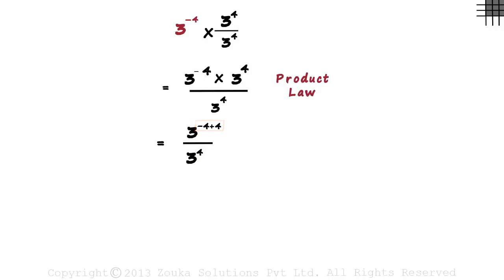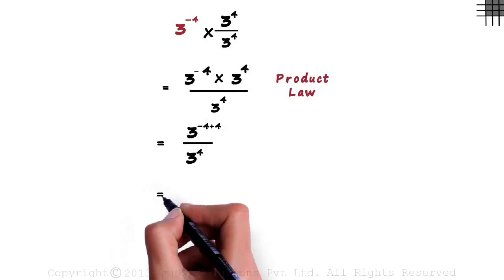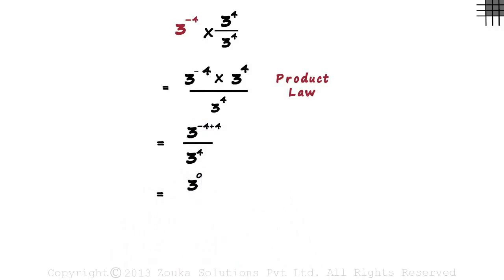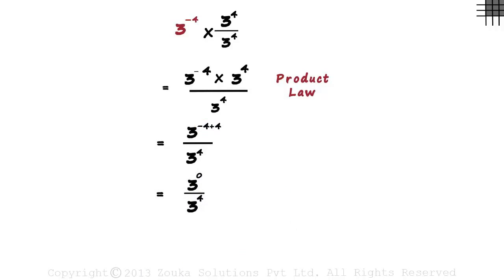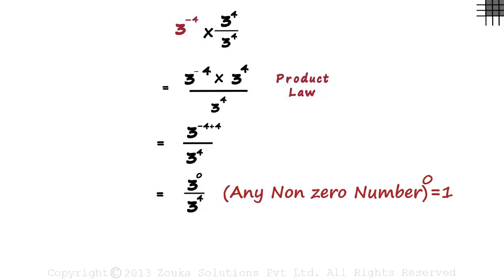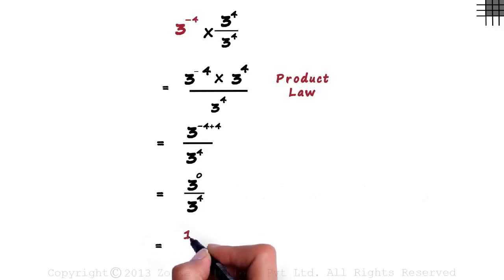Hence, that would equal 3 raised to 0 divided by 3 raised to 4. And since we know that any non-zero number raised to 0 equals 1, we can write it down as 1 divided by 3 raised to 4.